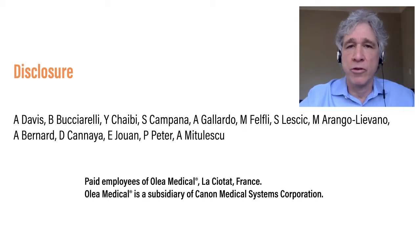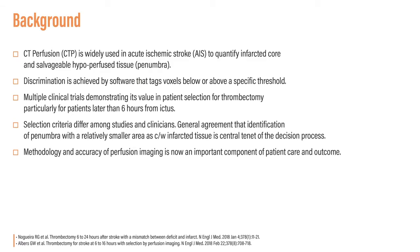Our disclosures may be seen on slide two. CT perfusion is widely used in acute ischemic stroke to quantify infarcted core and salvageable hypoperfused tissue, otherwise known as penumbra. Discrimination is achieved by software that tags voxels above or below a specific threshold. Multiple clinical trials have demonstrated its value in patient selection for thrombectomy, particularly in patients later than six hours from presentation. There is general agreement that identification of penumbra larger than an area of core infarcted tissue is a central tenant of the decision process. Consequently, the methodology and accuracy of perfusion imaging becomes an important component of patient care and outcome.